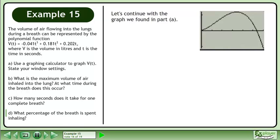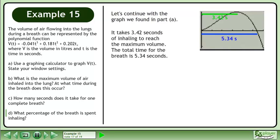Let's continue with the graph we found in Part A. It takes 3.42 seconds of inhaling to reach the maximum volume. The total time for the breath is 5.34 seconds. Divide 3.42 by 5.34 to get the percentage.